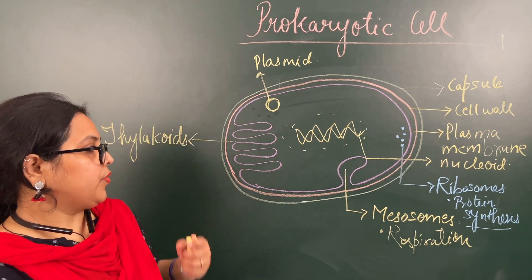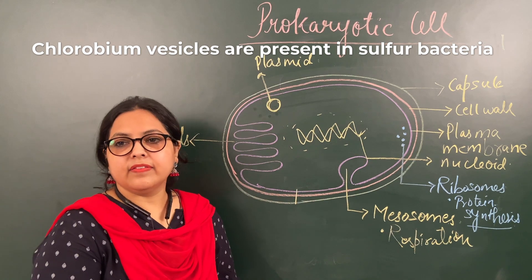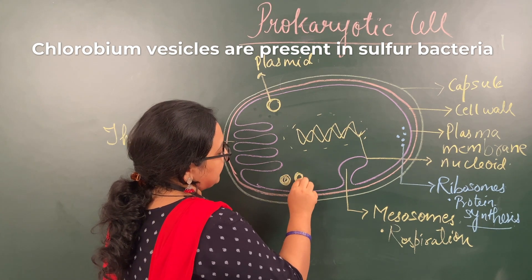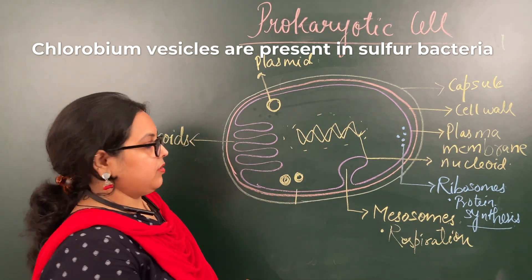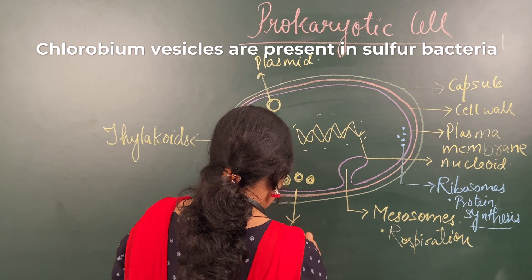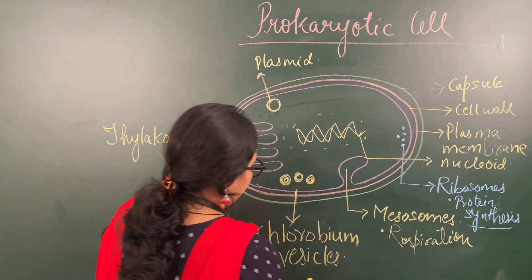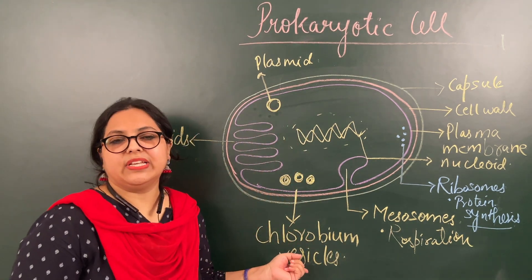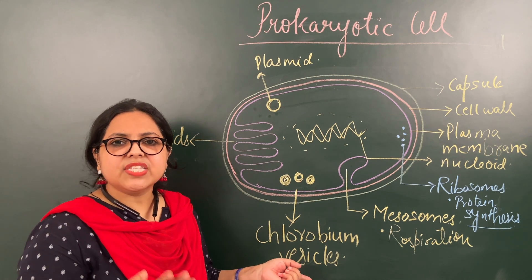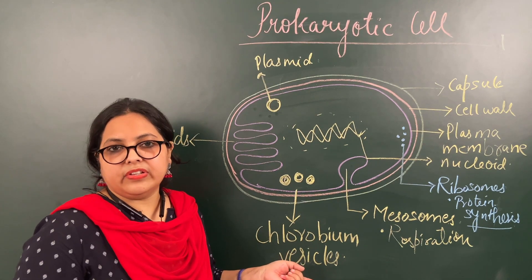The last thing present inside the prokaryotic cell is chlorobium vesicles. They are a bit larger than ribosomes and are exclusively present in sulfur bacteria. The word 'vesicle' refers to a sac or body filled with liquid — for example, our urinary bladder which is filled with liquid. So chlorobium vesicles are fluid-filled sacs found in sulfur bacteria.